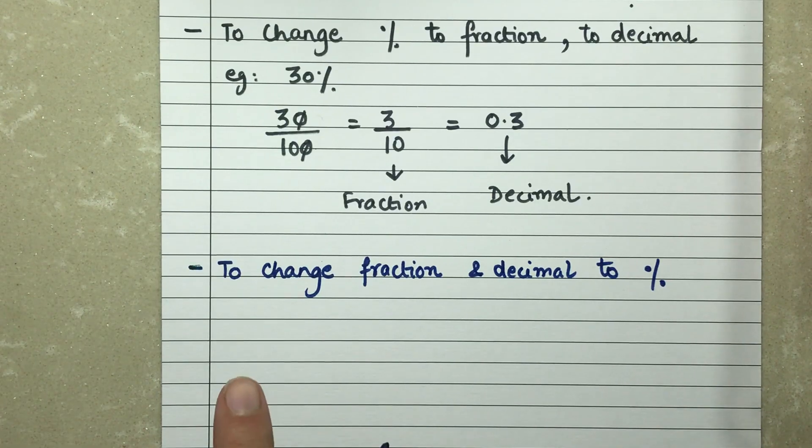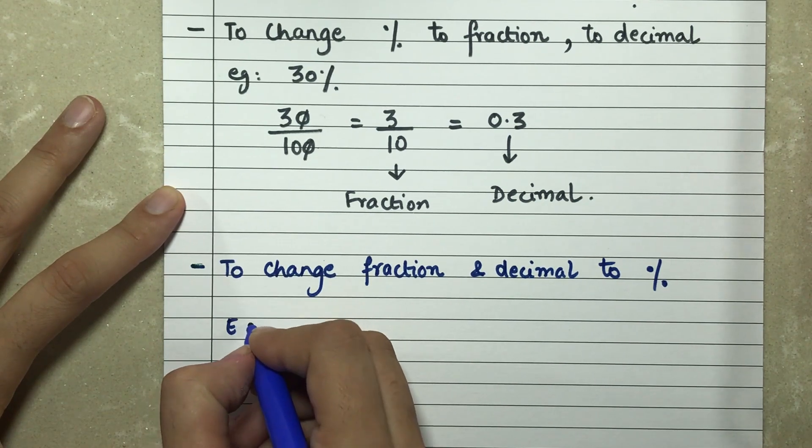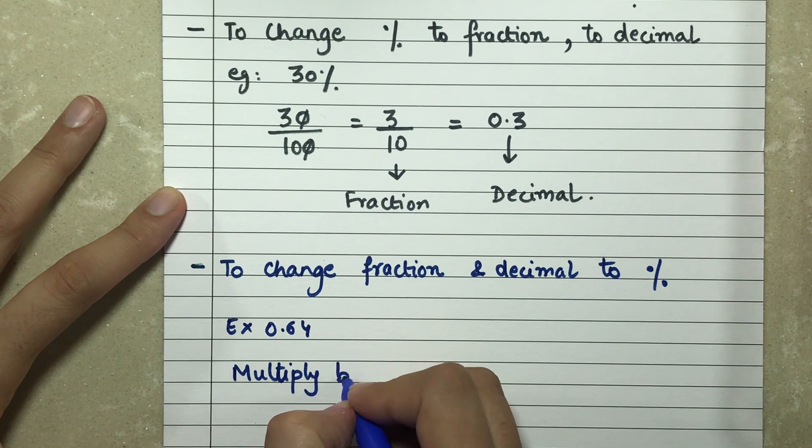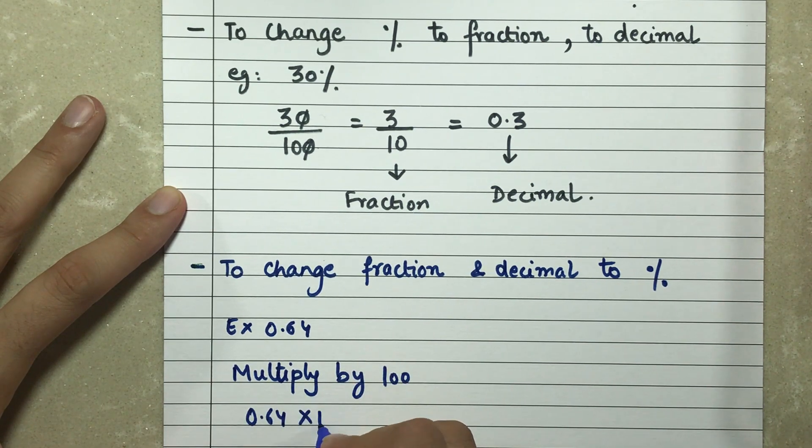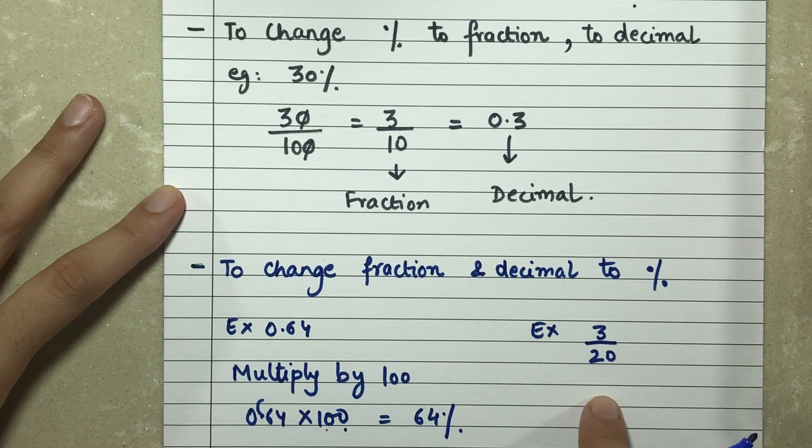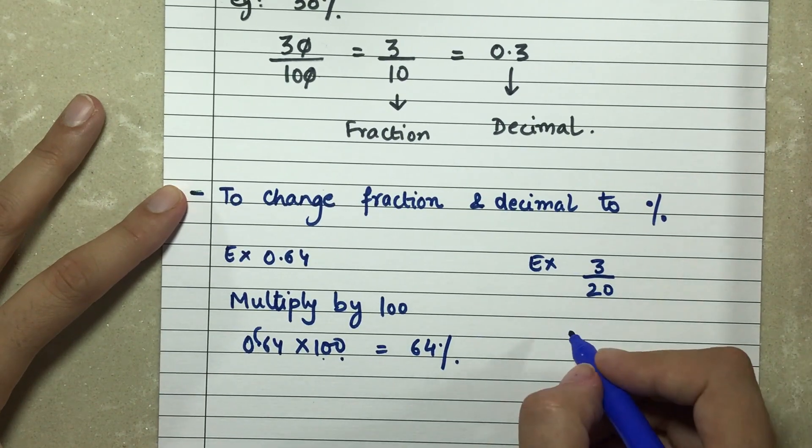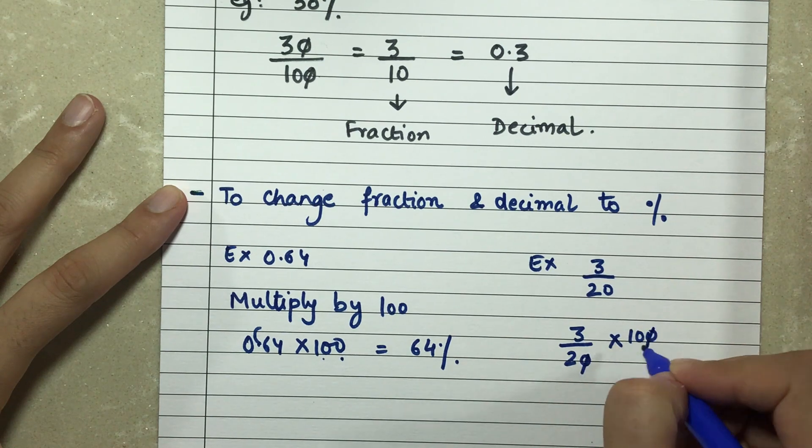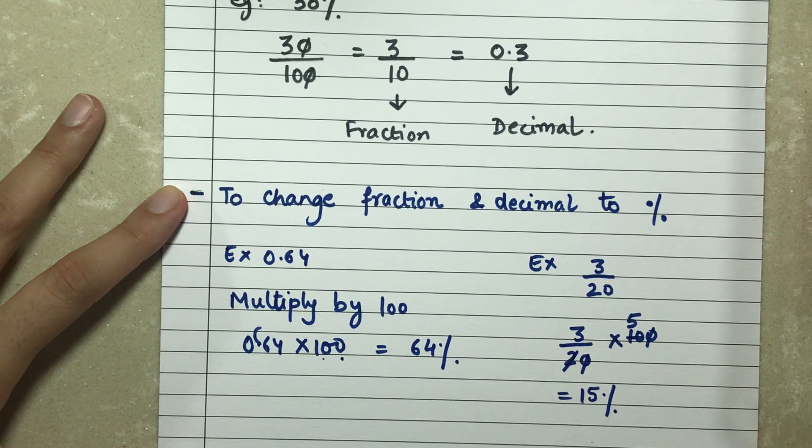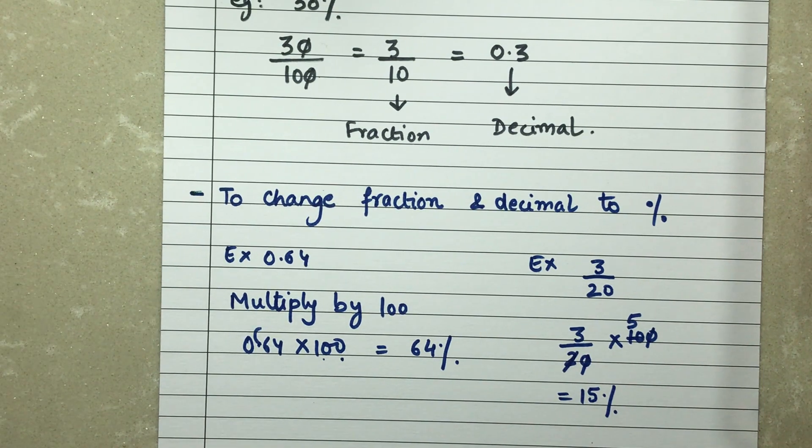The second topic is when we are required to change our fraction or decimal to percentage form. For example, if I have 0.64 and I have to change it to percentage, I am simply going to multiply by 100. So 0.64 multiplied by 100 becomes 64%. Now if I want to change my fraction, this is 3 by 20, and I want to change it to percentage, again I simply multiply by 100. So 3 by 20 times 100, we cancel zeros, this becomes 15%. So this becomes the percentage form from fraction and decimal.